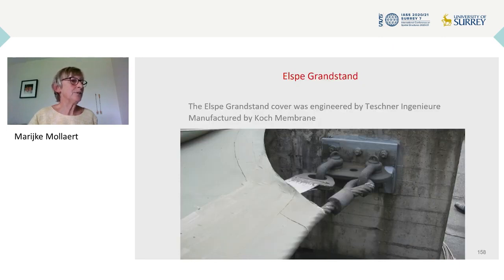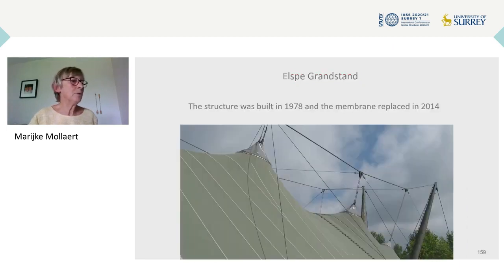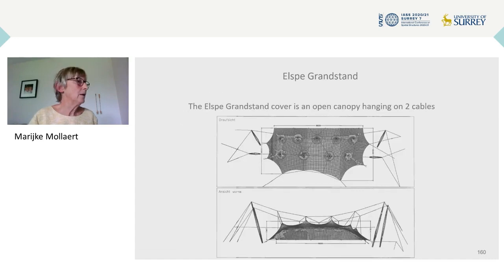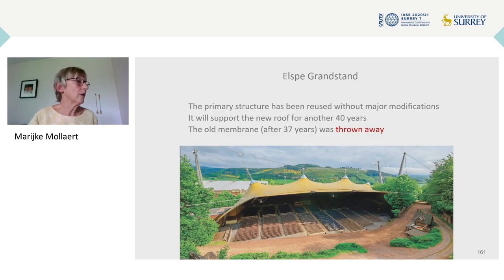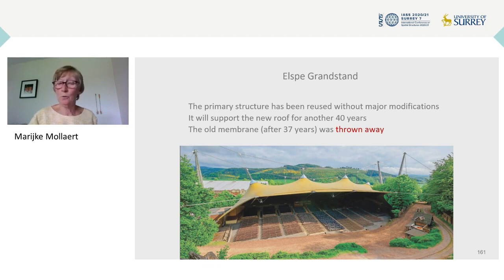The Elsa Grandstand cover was built in 1978, and the membrane was replaced in 2014. The open canopy is hanging on two main cables. The primary structure was reused without major modifications and will support the new roof for another 40 years. The old membrane, after being used 37 years, was thrown away.